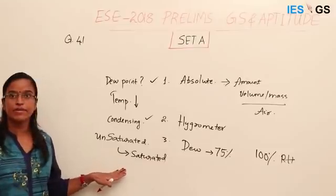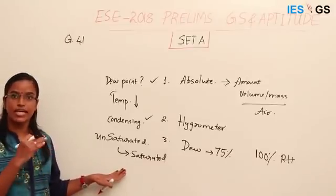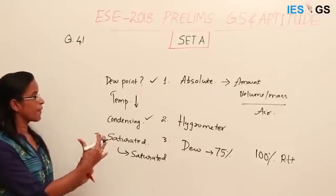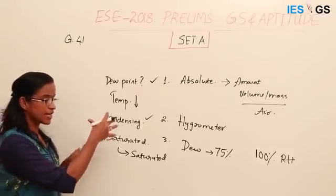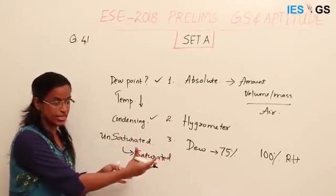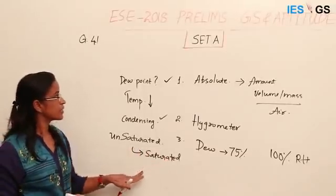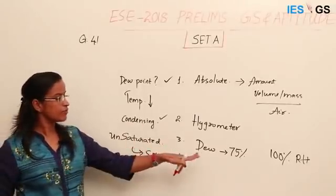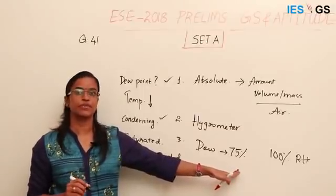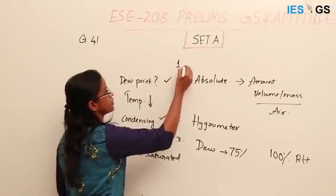At higher temperatures, the air can hold more water vapor. As temperature decreases, the water vapor holding capacity of the air decreases and it slowly becomes saturated — that point is the dew point. So the dew point will have 100% relative humidity, meaning the third statement is wrong. The answer includes only statements 1 and 2.